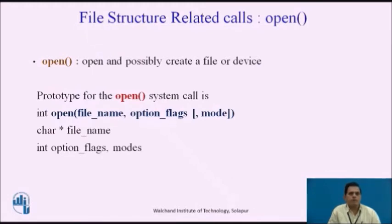Let us begin with the file structure related call: open. The open system call is used to create a file or device. The prototype is: integer open(filename, option_flags, mode). Here, filename is a pointer to the character stream that names the file. Option flags represent the type of the channel, and mode defines the file's access permissions if the file is being created. This function returns the file descriptor if successful, or minus one in case of an error.